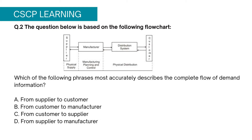The key word in the question is demand information. Ask yourself: where does demand information come from? Supply chain is all about the customer. Therefore demand always comes from the customer, which is your downstream end. Based on this, Options A and D can be eliminated since they begin from the supplier's end, which is an upstream end and entirely wrong. Option C is the correct answer, which says demand information flows from customer to supplier.